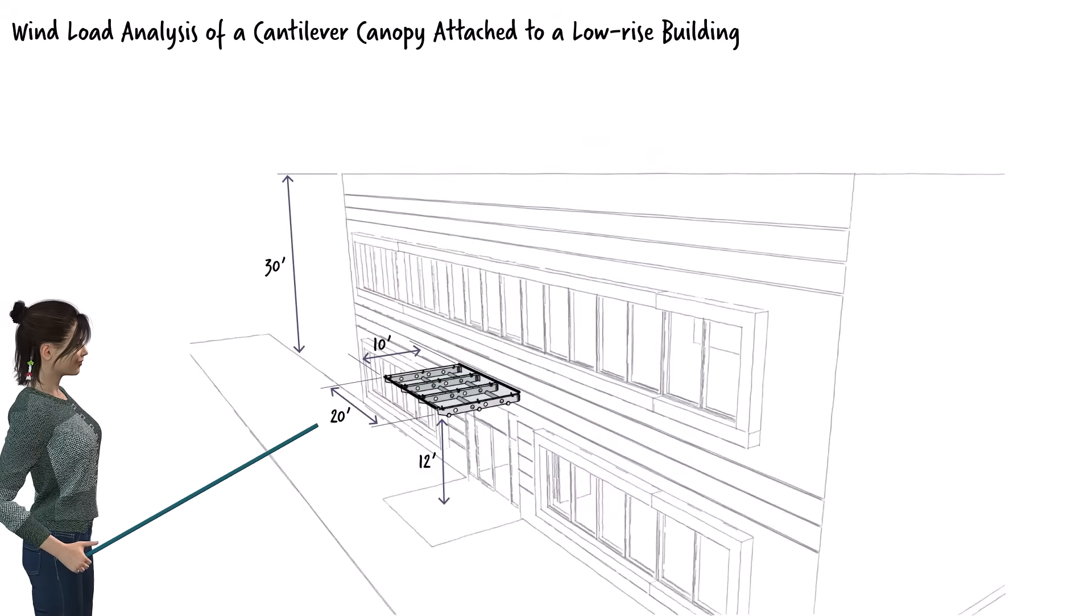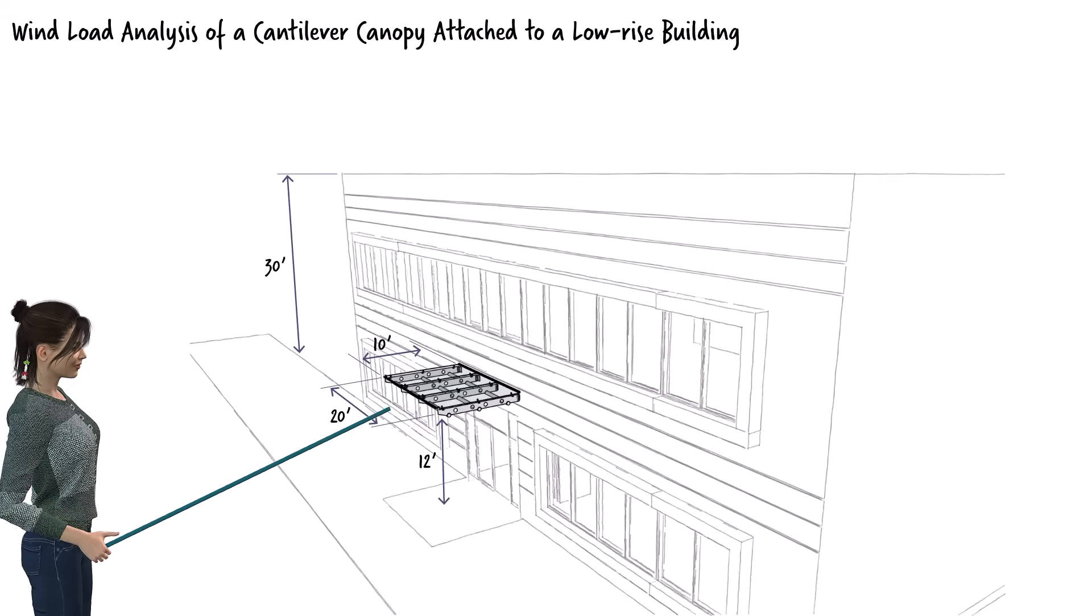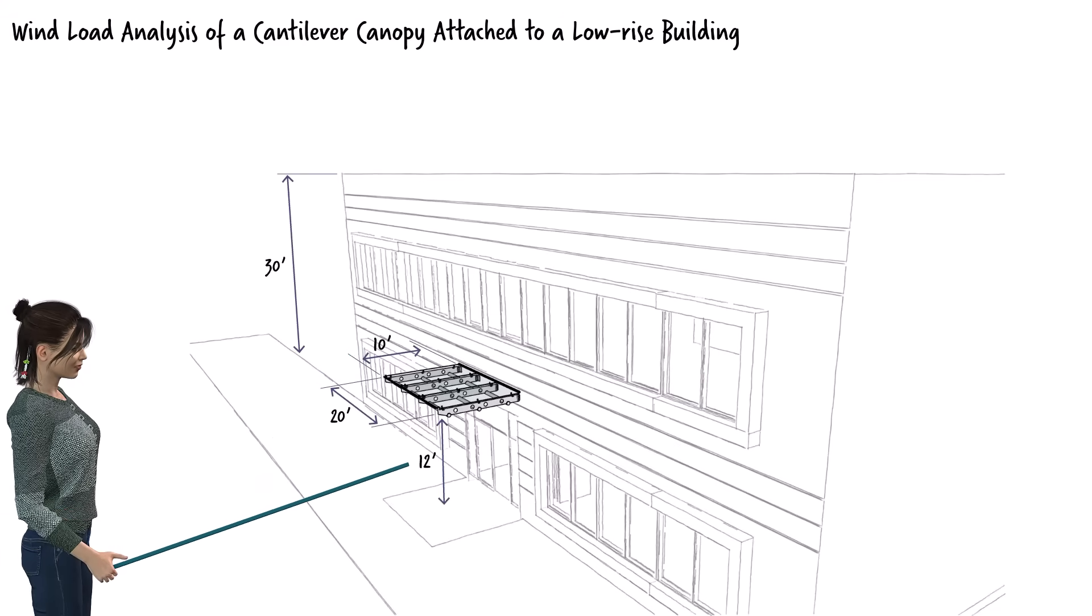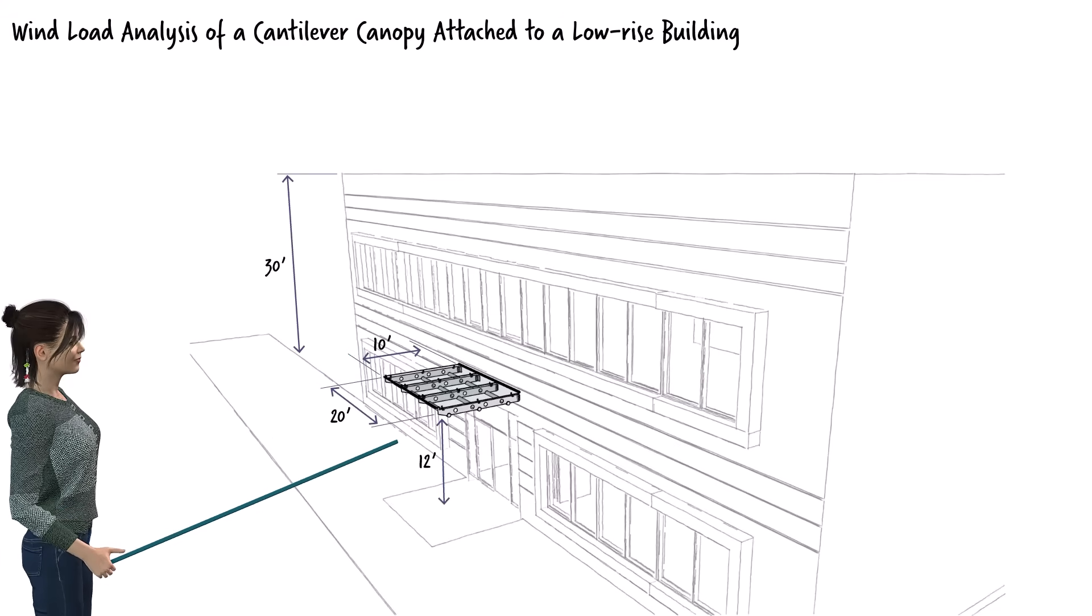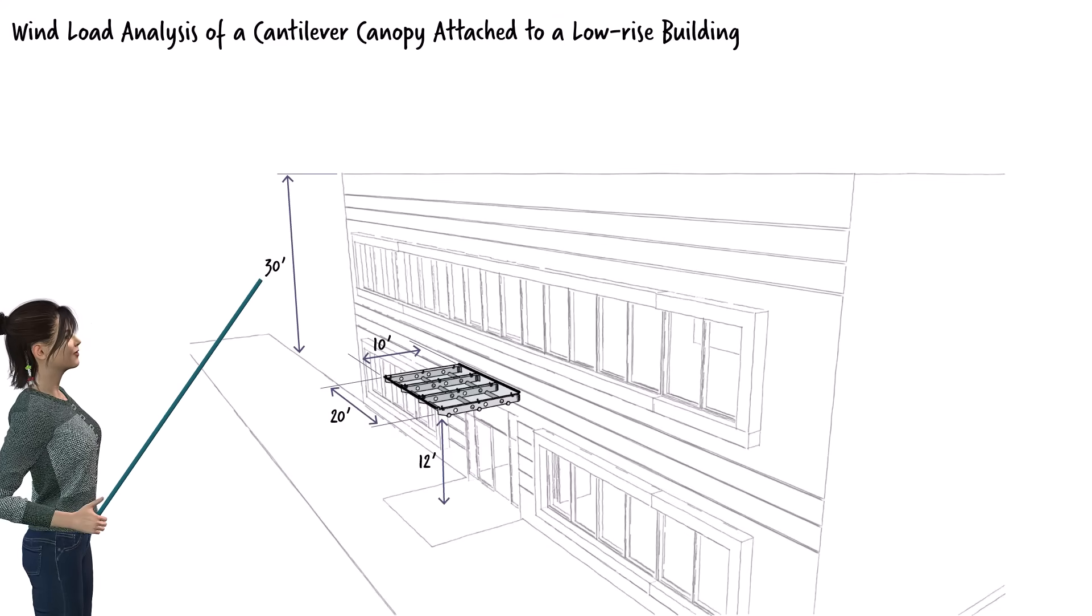The canopy measures 20 feet in width and 10 feet in depth. It is attached to the building's wall at a height of 12 feet above the ground. The height of the building is 30 feet.